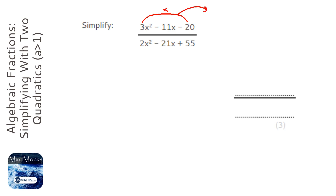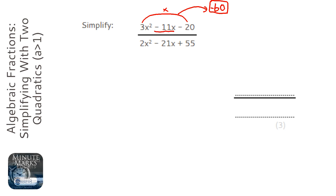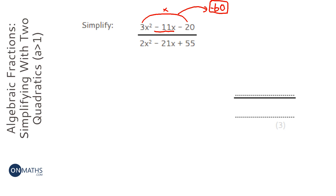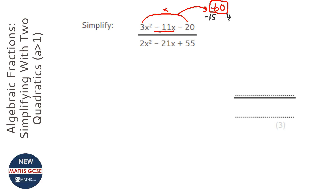We're going to times these together, which is technically minus 60. And we need two numbers that add together to make minus 11. They're probably going to have to be quite a big negative and quite a small positive number. So, minus 15 and 4. 15 times 4 is 60, therefore minus 15 times 4 is minus 60. And minus 15 plus 4 gives us minus 11, so that works well.